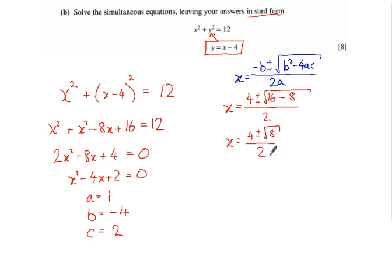So x is equal to 4 plus or minus root 8 over 2. We should know that root 8 we can simplify to 2 root 2, because root 8 is the square root of 4 times the square root of 2, which is 2 root 2. And now everything on the top is divisible by 2, so we can again simplify it down. x equals 2 plus or minus root 2.